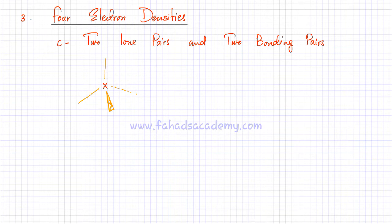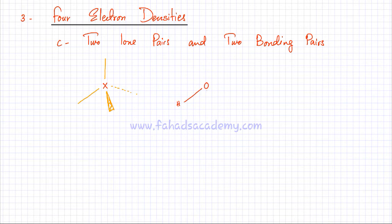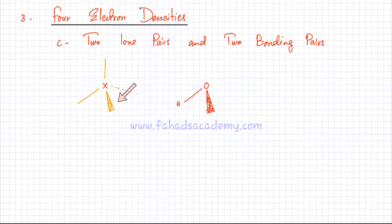An example of this is a water molecule. If I draw a water molecule, water makes two bonds with hydrogen — one bond here and another bond — following the same four electron density pattern, the tetrahedral geometry.